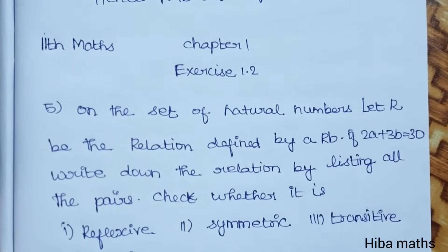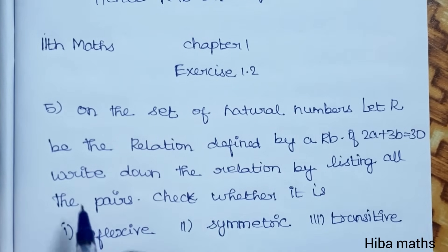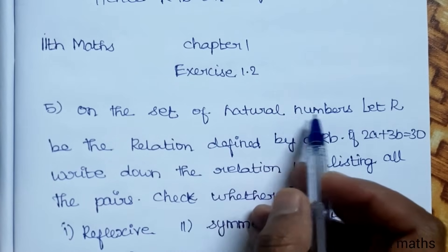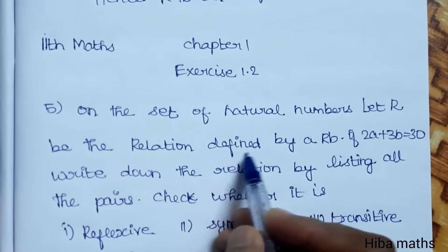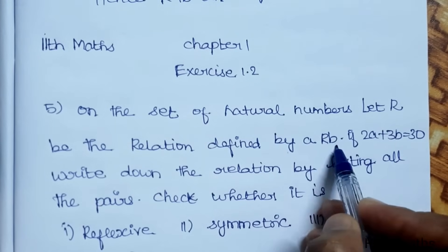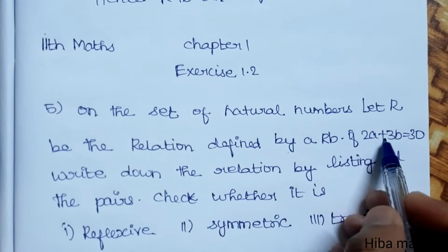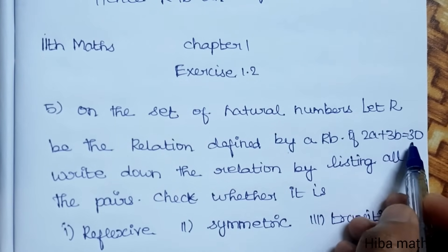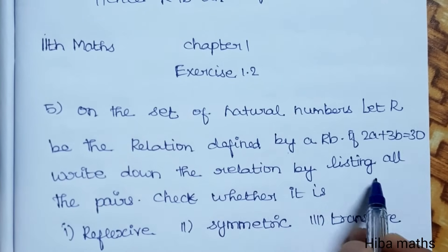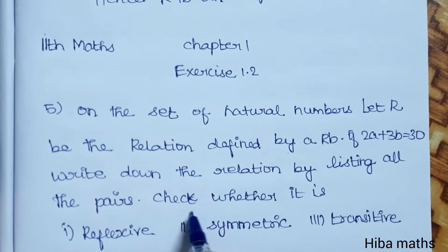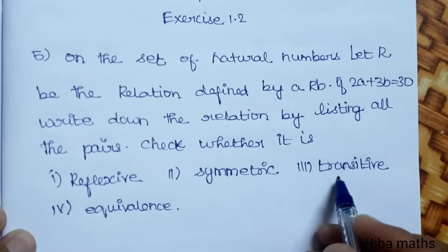Hello students, welcome to Hibamax 11th standard, Chapter 1, Exercise 1.2, the 5th question. On the set of natural numbers, let R be the relation defined by: a relates b if 2a plus 3b is equal to 30. Write down the relation by listing all the pairs, and check whether it is reflexive, symmetric, transitive, and equivalence.